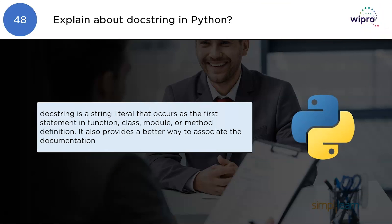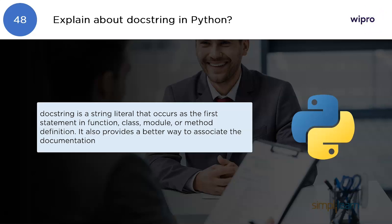Explain about docstrings in Python. A docstring is a string literal that occurs as the first statement in a function, class, module, or method definition. It also provides a better way to associate documentation.